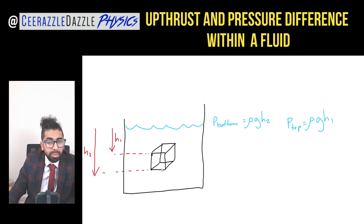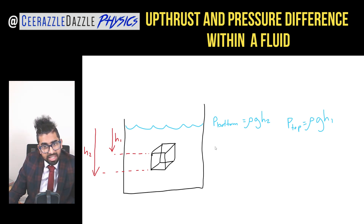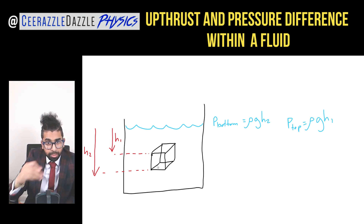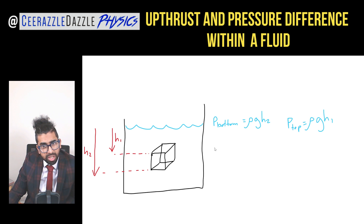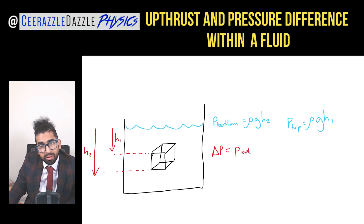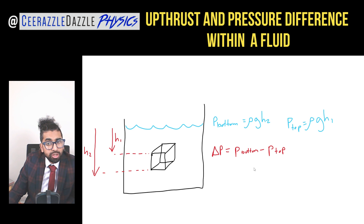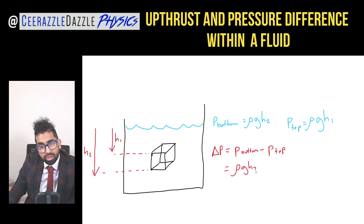The pressure at the bottom will be different from the pressure at the top, so there will be a pressure difference between the top and the bottom. We'll call this the change in pressure. The change in pressure will be equal to the pressure at the bottom minus the pressure at the top, which gives us rho g h2 minus rho g h1.